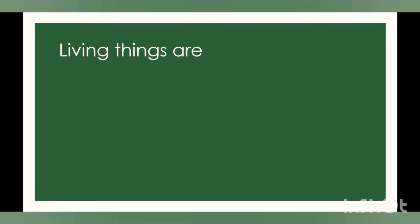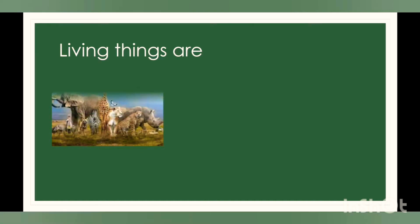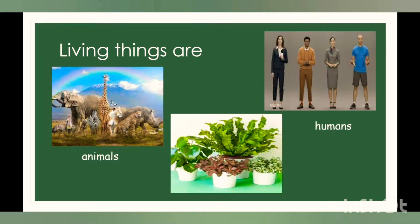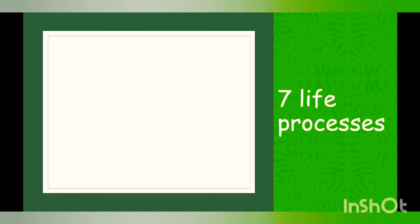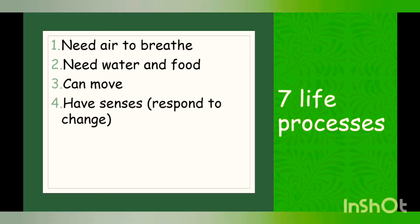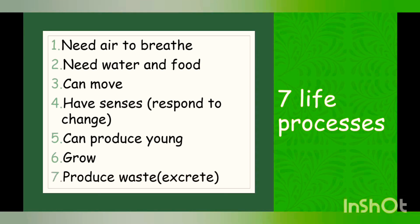We all know what the living things are. Living things are animals, humans and plants. We have categorized them as living things based on seven life processes, on which we decide that something is living or not. These are: need air to breathe, need water and food, can move, have senses which means respond to change, can produce young, grow, and produce waste — that is excrete. These are the life processes.